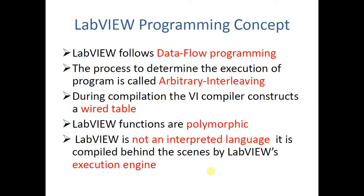The process used to determine program execution is called arbitrary interleaving. Interleaving is a technique for making forward error correction more robust with respect to burst errors. If something fails, it will give an error — arbitrary means it will give some number identifying the error so we can identify where the error comes from.